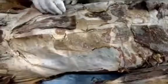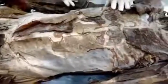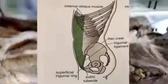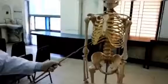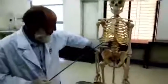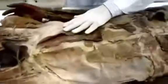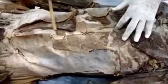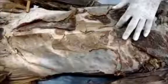The external oblique originates from the outer surface of the lower eight ribs. The muscle fibers radiate from there downwards and medially. The insertion is wide: into the xiphoid process, linea alba, inguinal ligament, and the iliac crest. So it has a broad origin from the outer aspect of the lower ribs and a wide insertion.